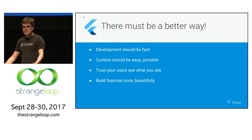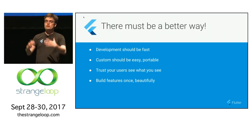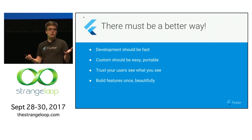Development should be fast — we're in 2017. Customization should be easy. You should be able to trust that what you saw on your phone while developing is what your users see. And ideally you should be able to build things once and take that hard work to more than one place.